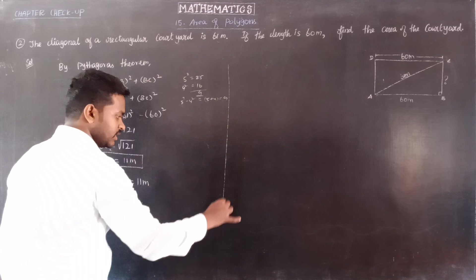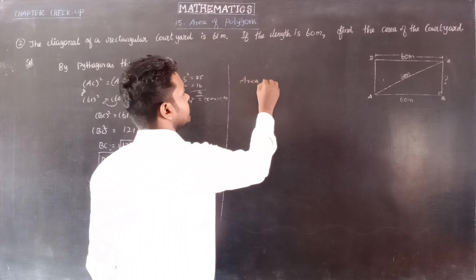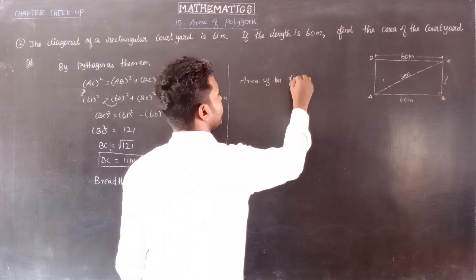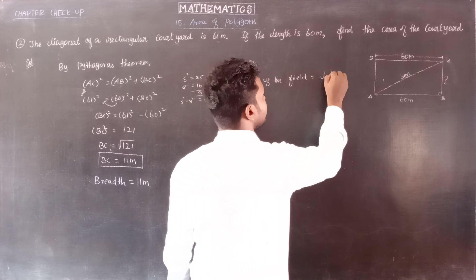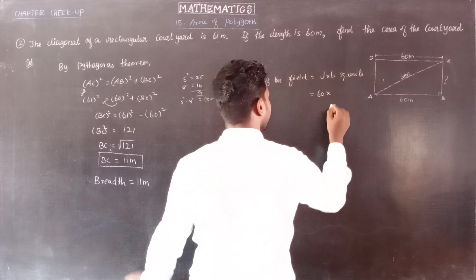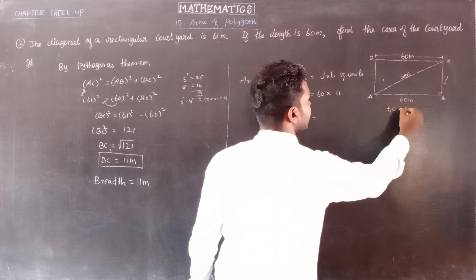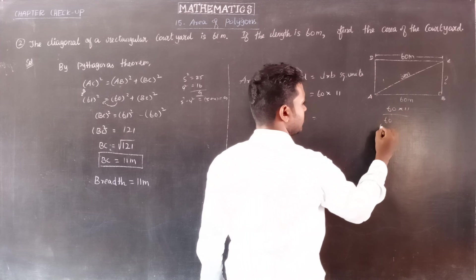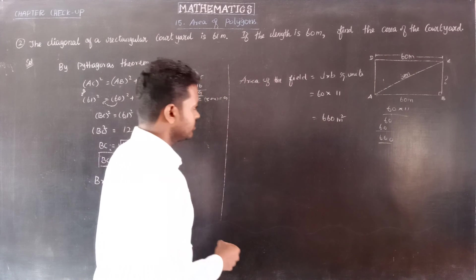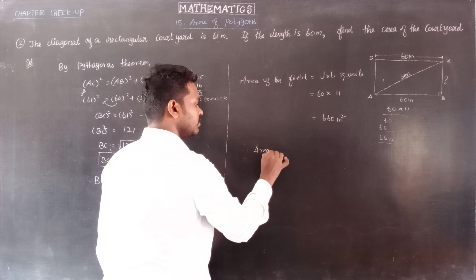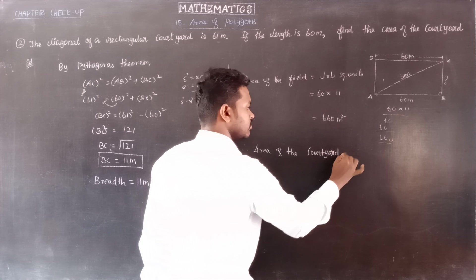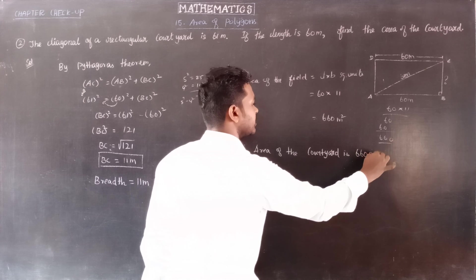Now we find the area using length and breadth. Area of the rectangular field = L × B square units. Length is 60 meters, breadth is 11 meters. So area = 60 × 11 = 660 meter square. Therefore, area of the courtyard is 660 meter square.